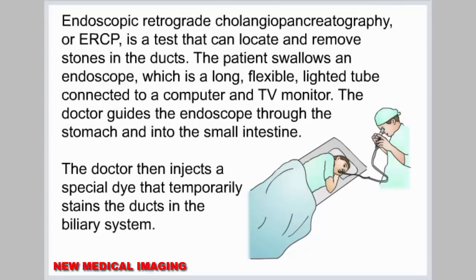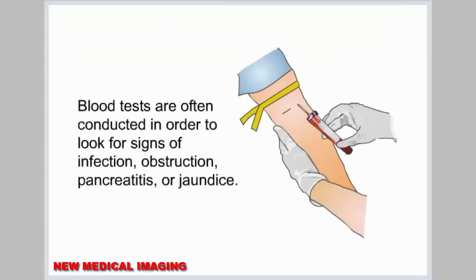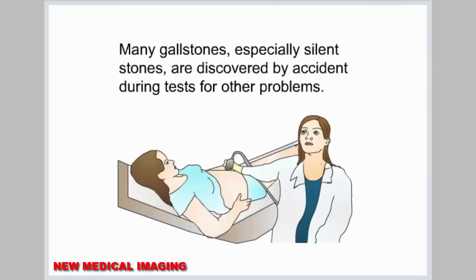Endoscopic retrograde cholangiopancreatography, or ERCP, is a test that can locate and remove stones in the ducts. The patient swallows an endoscope, which is a long, flexible, lighted tube connected to a computer and TV monitor. The doctor guides the endoscope through the stomach and into the small intestine, then injects a special dye that temporarily stains the ducts in the biliary system. Blood tests are often conducted to look for signs of infection, obstruction, pancreatitis, or jaundice. Many gallstones, especially silent stones, are discovered by accident during tests for other problems.